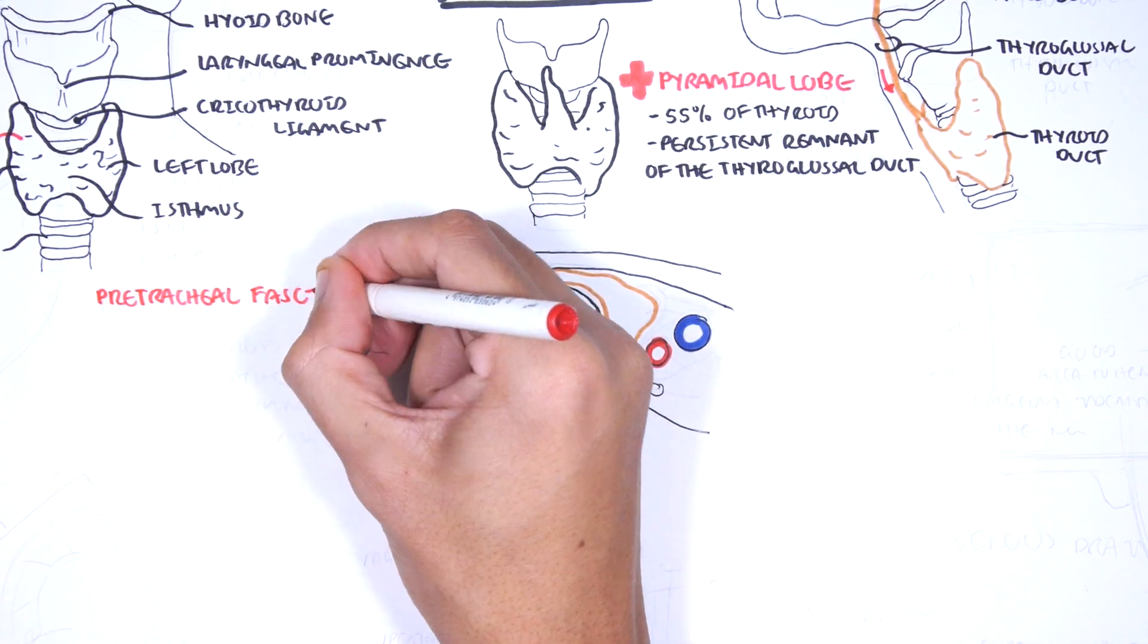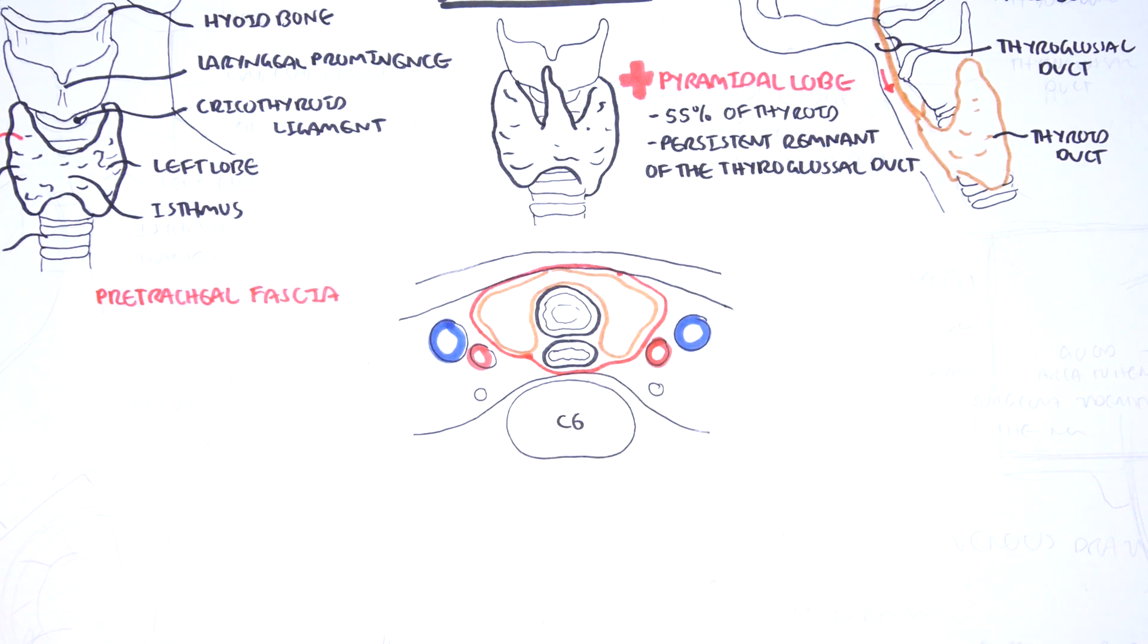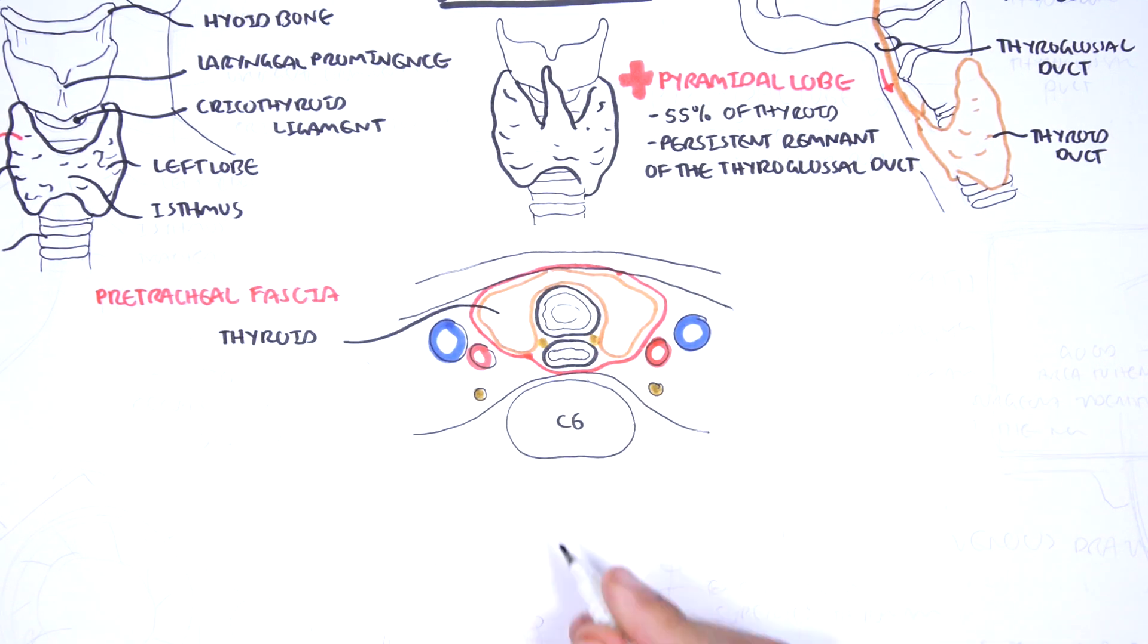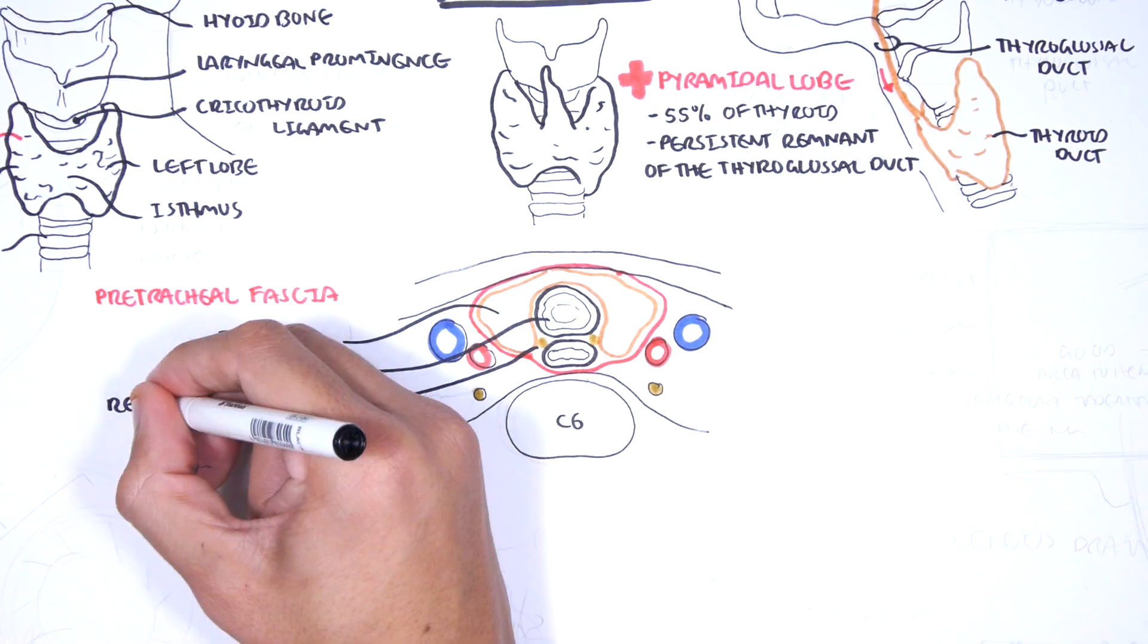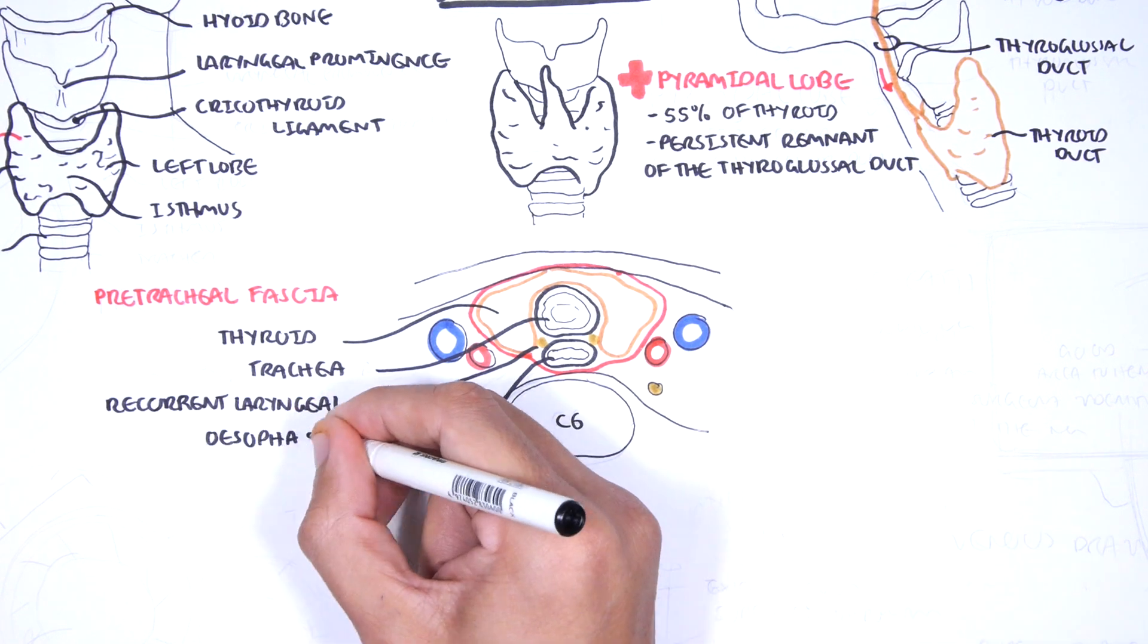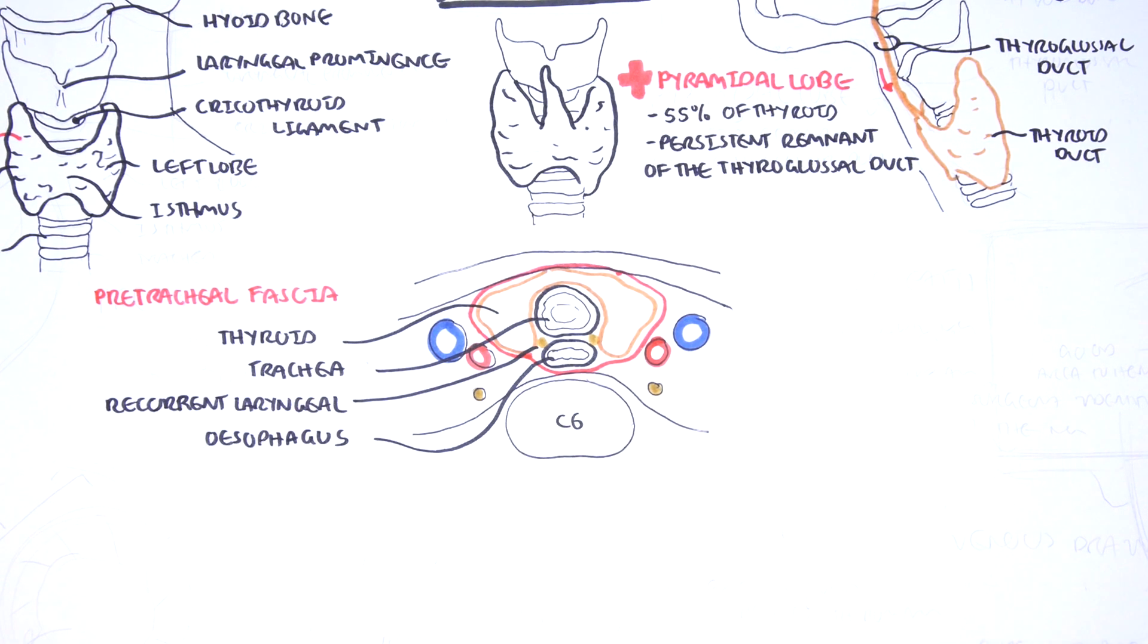The thyroid gland is in the visceral compartment of the neck along with the trachea, recurrent laryngeal nerve, esophagus and pharynx. The compartment is enclosed in the pretracheal fascia which anchors the thyroid gland to the trachea so that the thyroid moves up with swallowing.